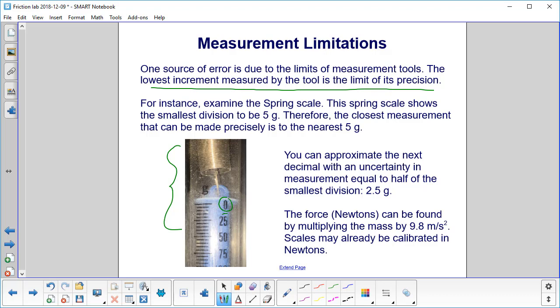You can see 0 here, here's 25. You have 5 increments in between. Each one is at 5 grams. You can approximate the next decimal with an uncertainty in measurement equal to half of the smallest division, or 2.5 grams.